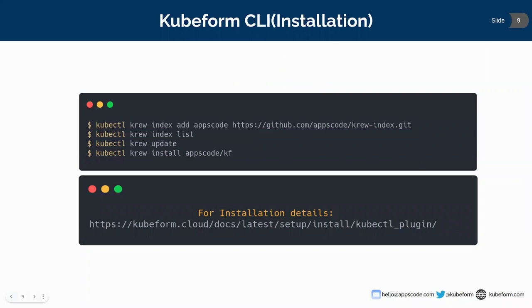First, we need to install the QFIRM CLI. QFIRM CLI provides a couple of commands for your convenience to talk to QFIRM resources. For installing the QFIRM CLI you can use these commands, and for the installation details you can go to our official QFIRM website to see how to install the QFIRM CLI.